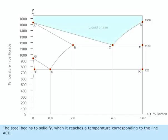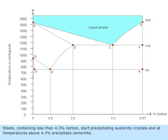The steel begins to solidify when it reaches a temperature corresponding to the line ACD. Steels containing less than 4.3 percentage carbon start precipitating austenite crystals, and at temperatures above 4.3 percentage precipitate cementite.